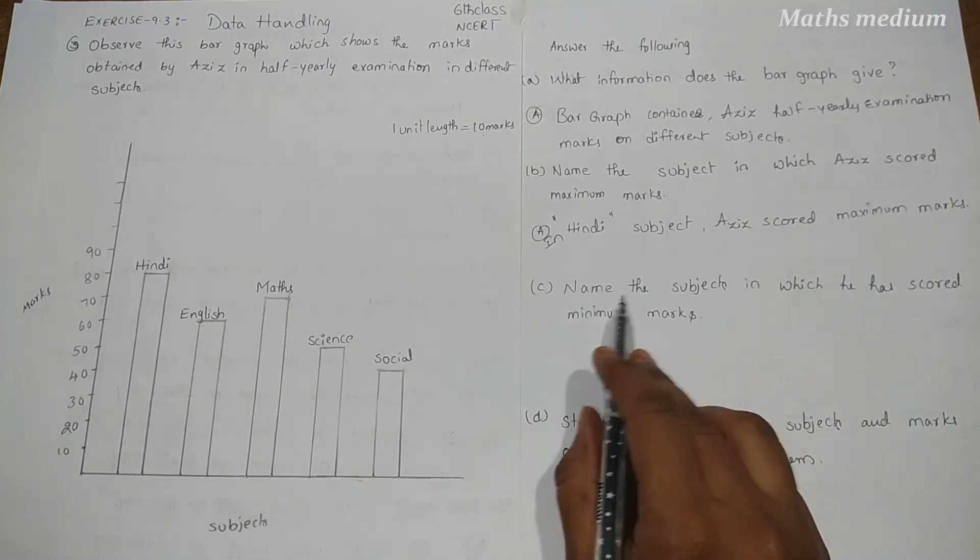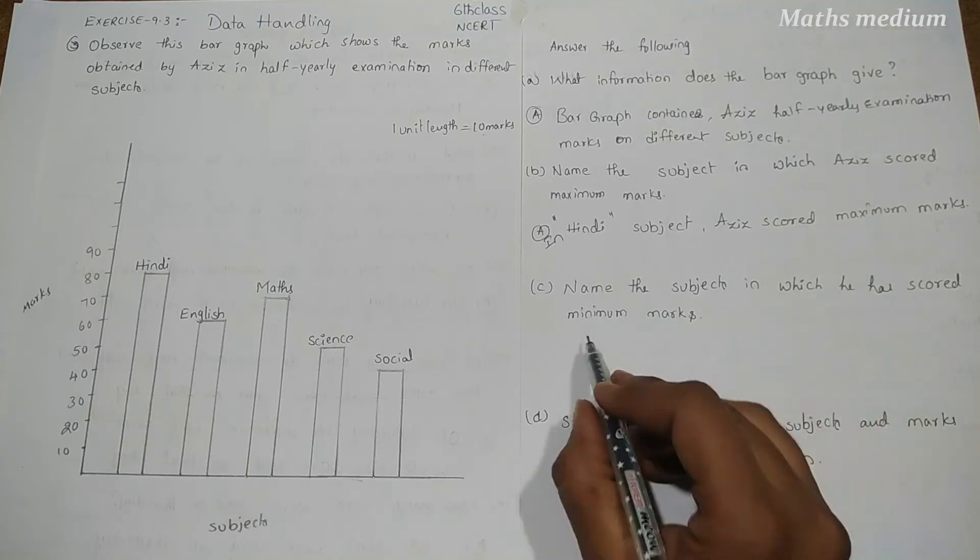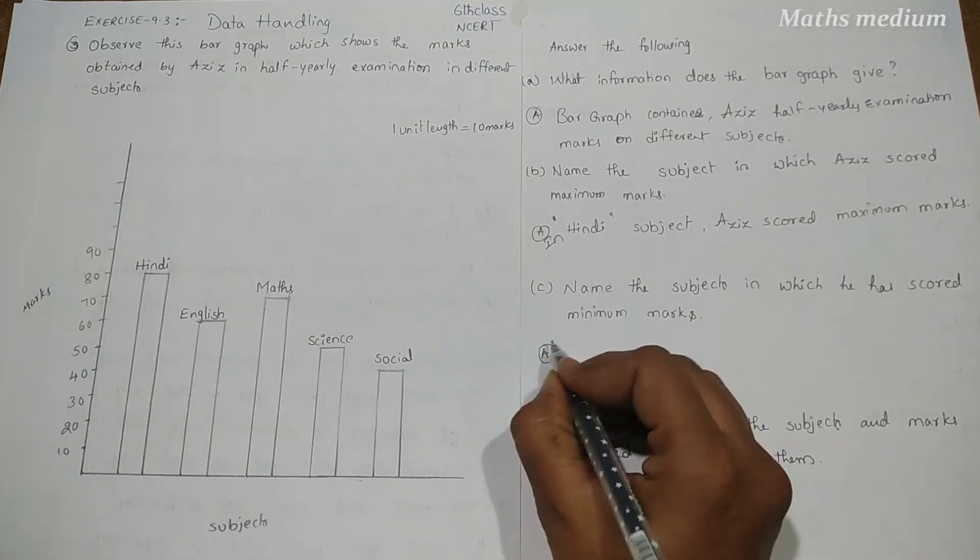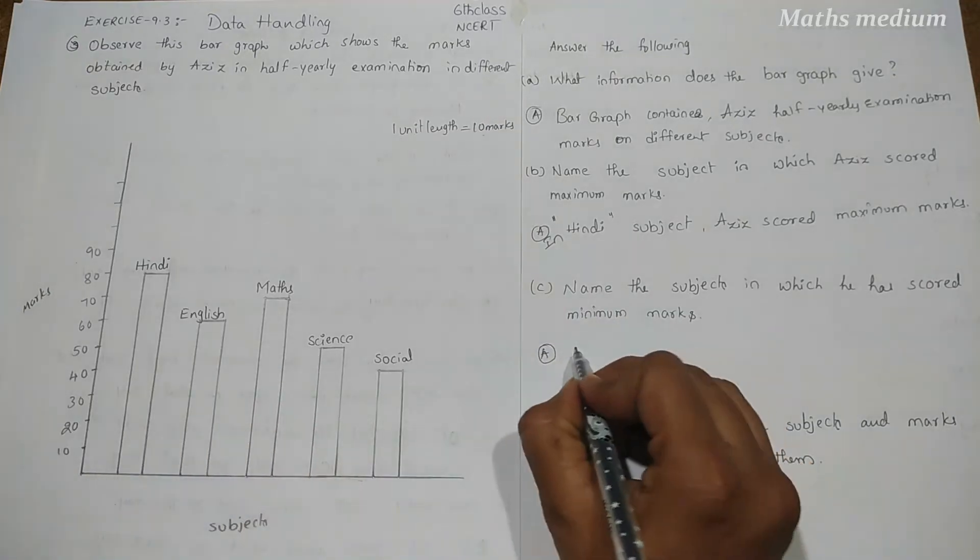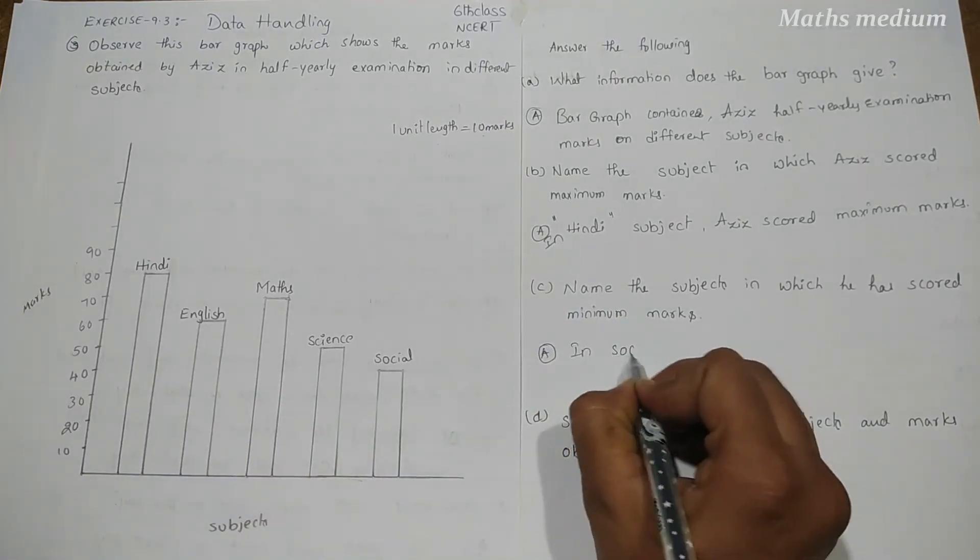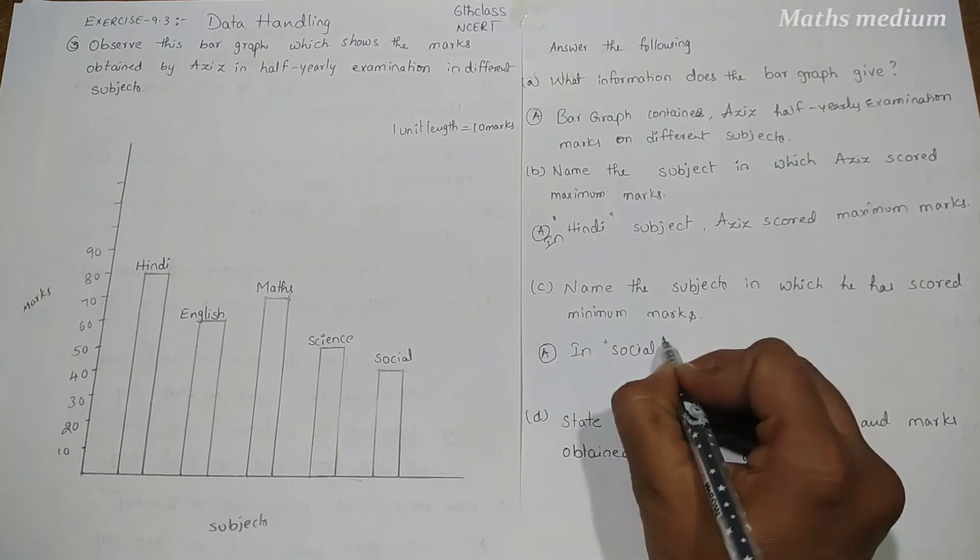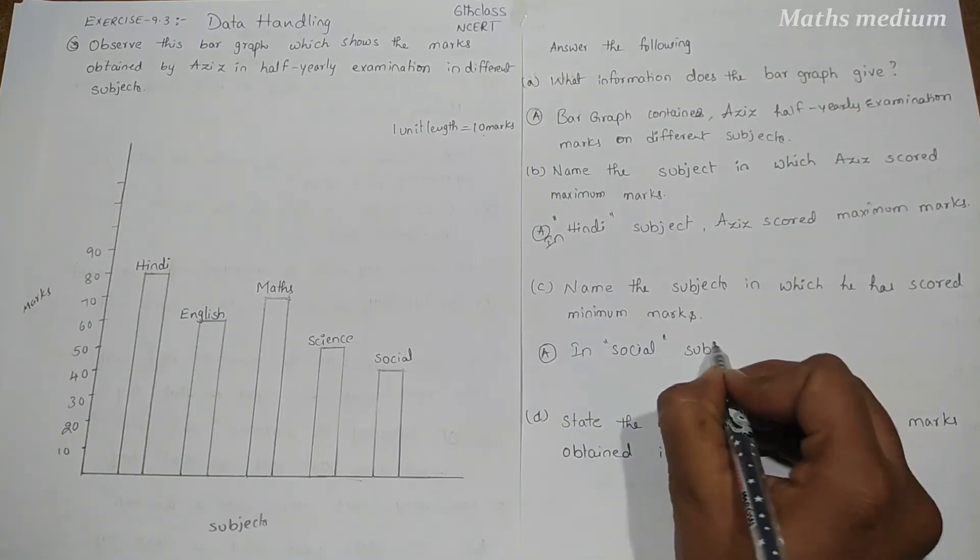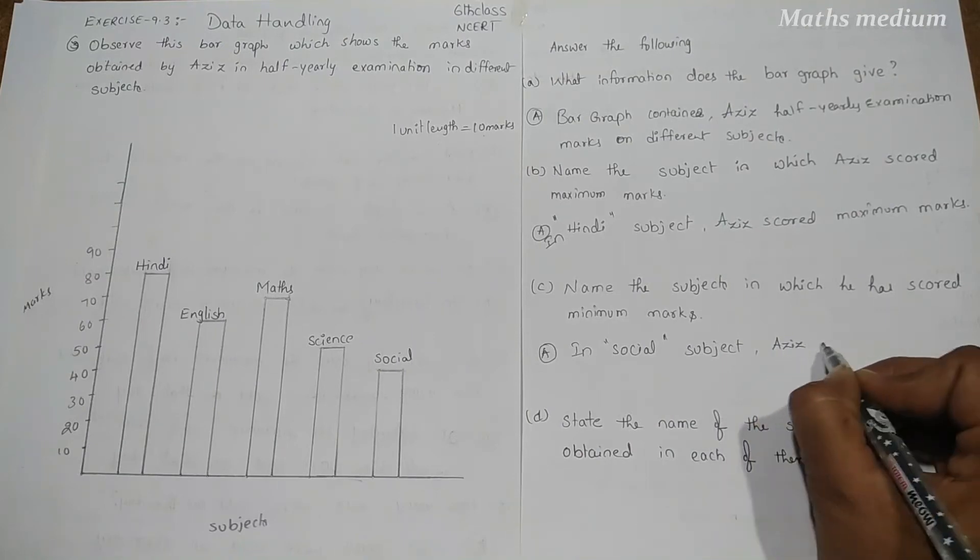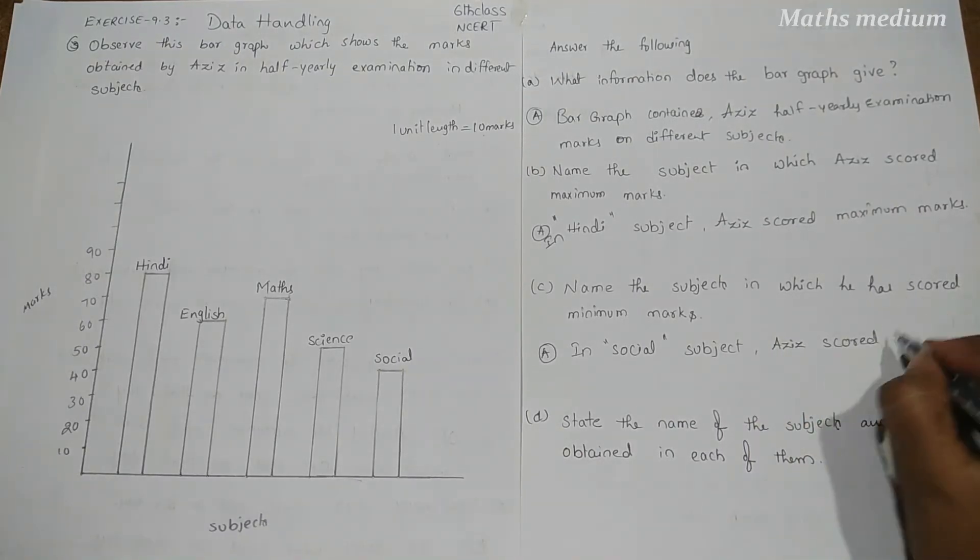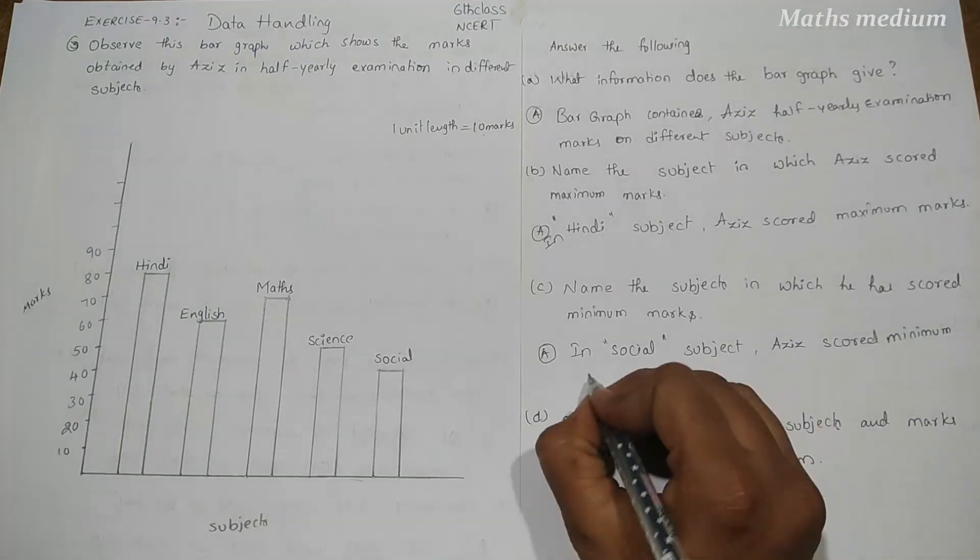Next, name the subjects in which he has scored minimum marks. In which subject he has scored minimum? It means Social. In Social subject, Aziz scored minimum marks.